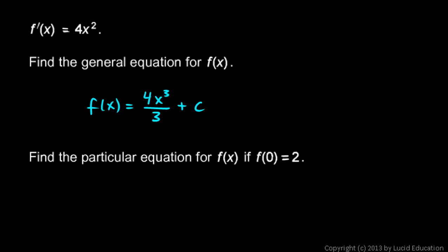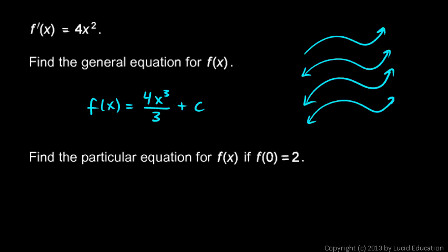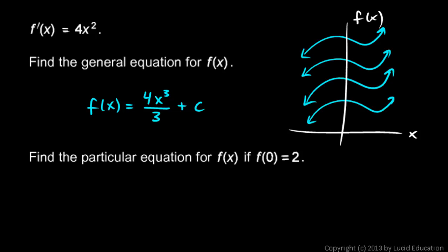Now we're told to find the particular equation for f if f of 0 equals 2. This is a cubic, so let me make a little sketch. It could be any of these cubics shifted up or down — an infinite number of possible cubics. But only one of them is going to go through the point where x is 0 and y is 2. One piece of information allows you to go from an infinite number of possibilities to a single possibility, which is basically finding the value of c.